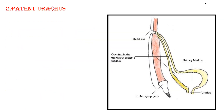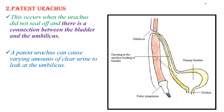The second is patent urachus, which is the most common one. This occurs when the urachus did not seal off and there is a connection between the bladder and the umbilicus. A patent urachus can cause varying amounts of clear urine to leak at the umbilicus.